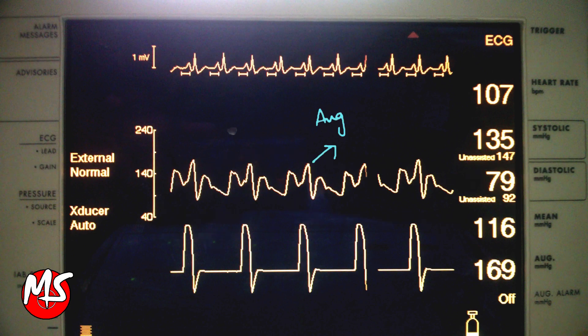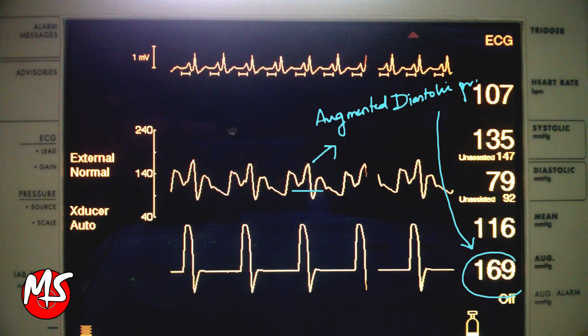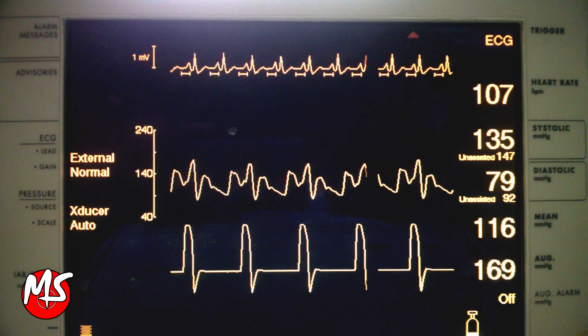Augmented diastolic pressure, when timed properly, should be more than the unassisted systolic pressure, and it increases coronary blood flow. The balloon pressure waveform has six phases.